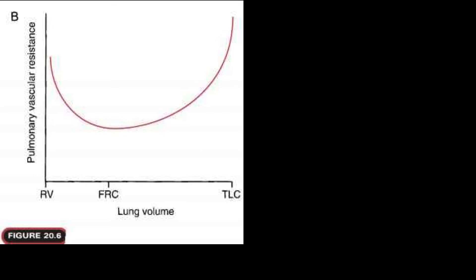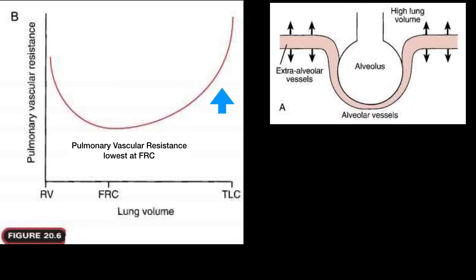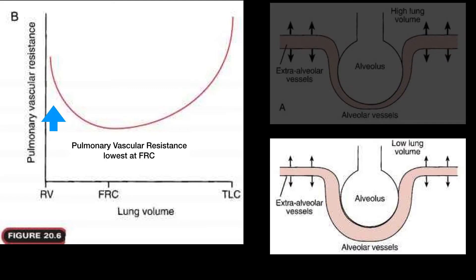If you make your lungs huge — at total lung capacity, as large as you can expand — pulmonary vascular resistance is high as well. The sweet spot where pulmonary vascular resistance is lowest occurs at FRC. This is because at high lung volumes, alveolar vessels are compressed, causing high vascular resistance. At low lung volumes, extra-alveolar vessels are compressed. So at both extremes, you have high pulmonary vascular resistance and worse pulmonary blood flow. Optimal blood flow occurs at FRC.